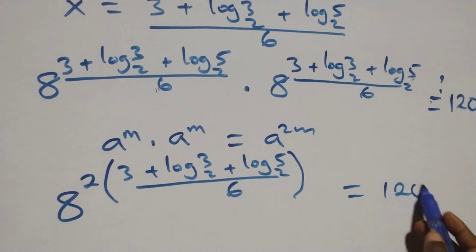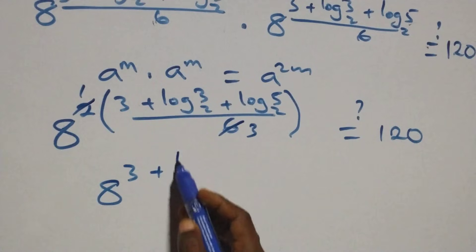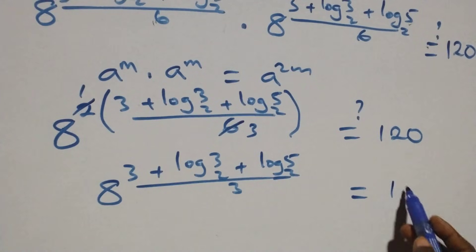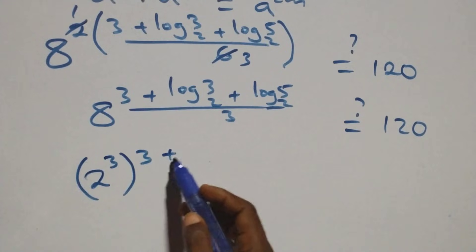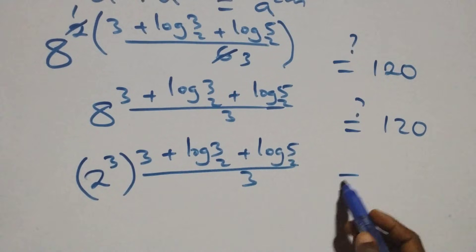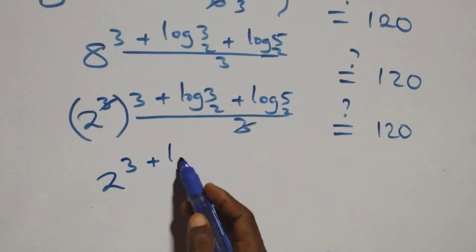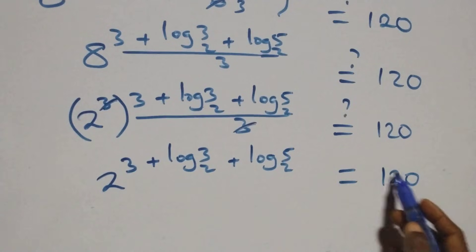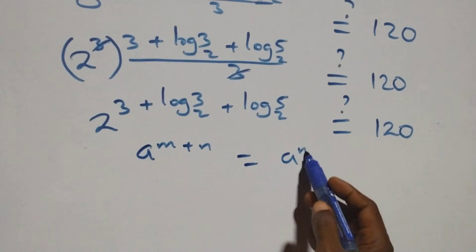We check if this equals 120 on the right hand side. The power multiplies: 2 and 1 over 3 combine to give 8 raised to power (3 + log₂3 + log₂5) times (1/3), which should equal 120. We can also write 8 as 2³, so this becomes (2³) raised to power (3 + log₂3 + log₂5) times (1/3), which equals 120. The 3s cancel, giving 2 raised to power (3 + log₂3 + log₂5) equals 120. Applying the log index rule — a^(n+m) equals a^n times a^m — we expand this.